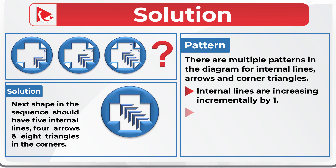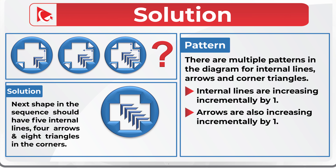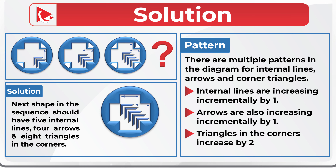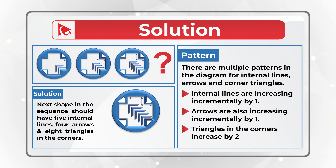Arrows are also incrementally increasing by one: the first object has one arrow, the second has two, the third has three — so the next should have four arrows. Corner triangles increase by two: the first object has two, the second has four, the third has six — so the next should have eight. Based on these calculations, the correct answer is Choice B, which matches all of these patterns.